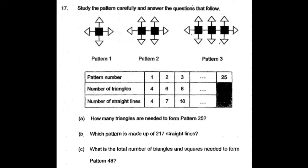Pattern problems can usually be done in three methods. We have to identify which is the most appropriate method for the given pattern. Patterns 1, 2, and 3 are given — study the pattern carefully and answer the questions that follow: how many triangles are needed to form pattern 25? Which pattern is made up of 217 straight lines? And what is the total number of triangles and squares needed to form pattern 48?